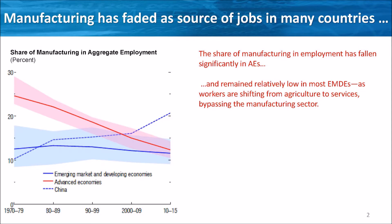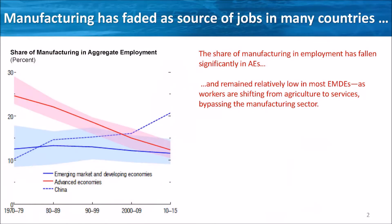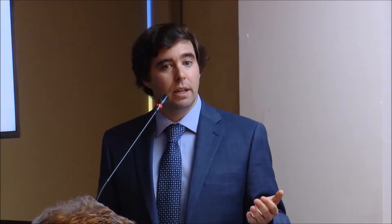In particular, we look at the decline of manufacturing employment and the implications it may have for productivity, income per capita, and inequality. A key observation that has attracted attention is that manufacturing appears to be fading as a source of jobs. This chart shows the share of manufacturing in aggregate employment from a broad set of advanced economies, shown in red, and emerging market and developing economies, shown in blue. The share of manufacturing jobs has been steadily declining in advanced economies over the past four or five decades, declining in every single advanced economy in the sample.